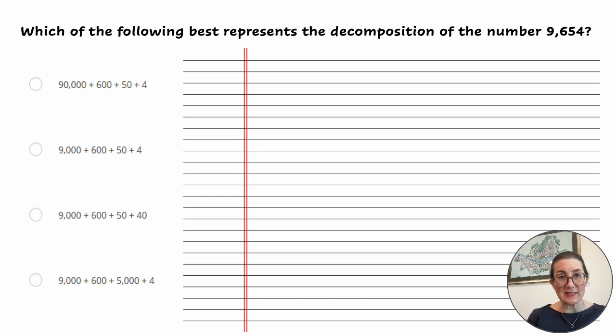Which of the following best represents the decomposition of the number 9,654? Let's first look at the definition of decomposition. Decomposition is the breakdown of numbers into parts. Decomposing numbers helps students develop number sense and understand place value.